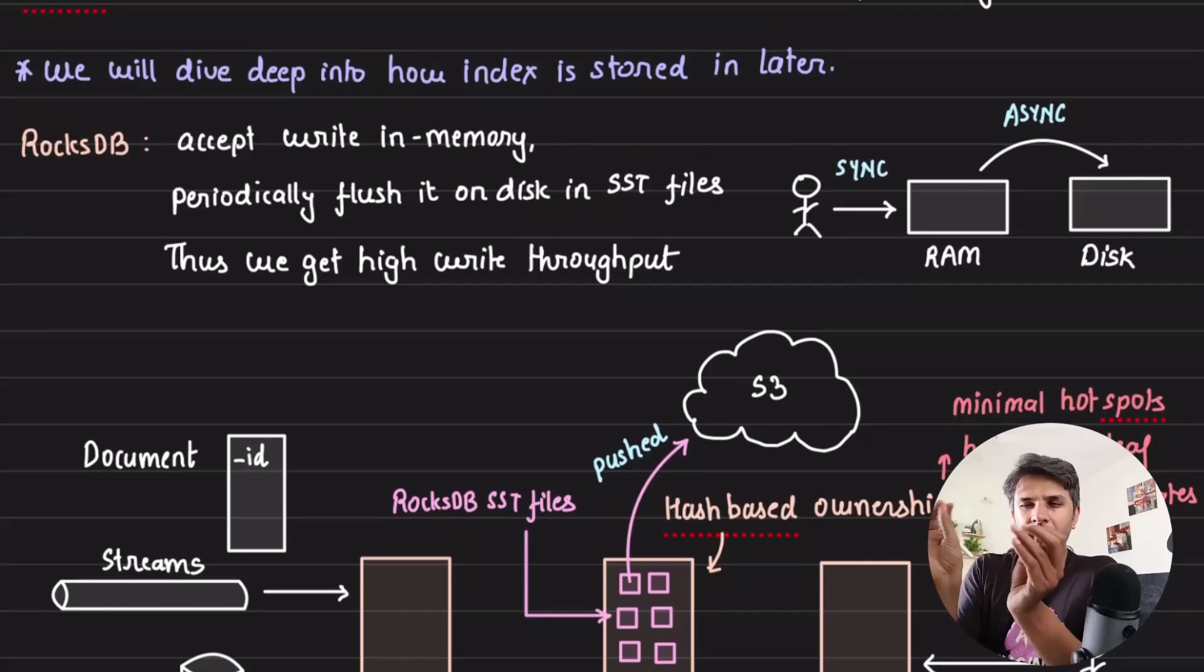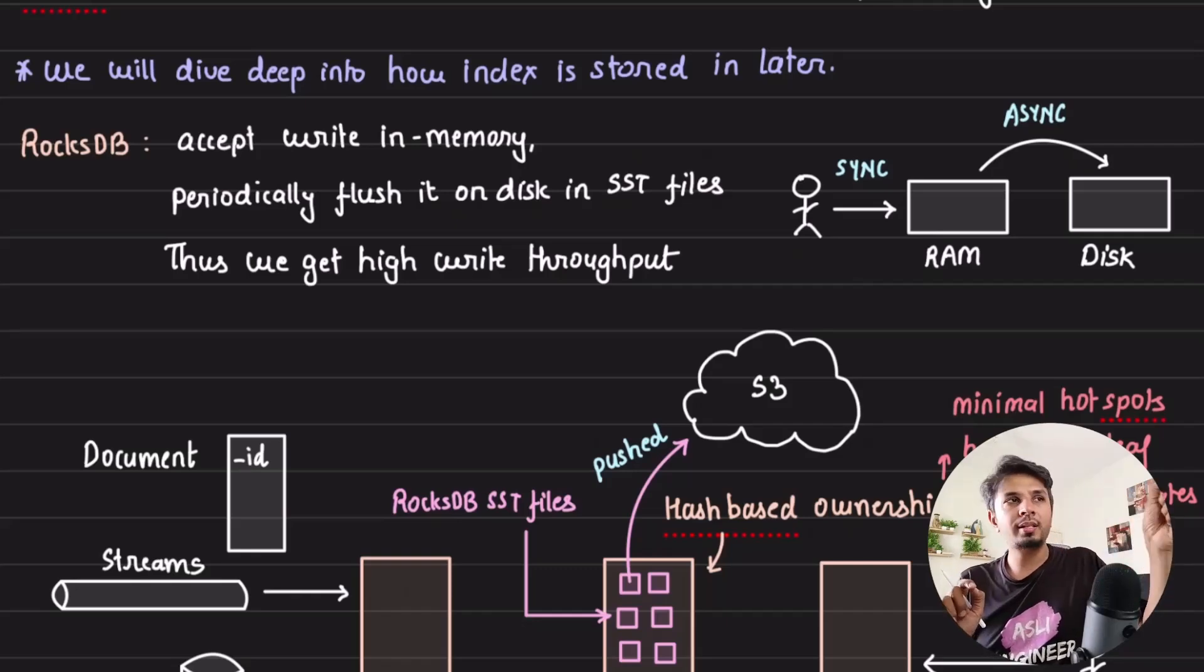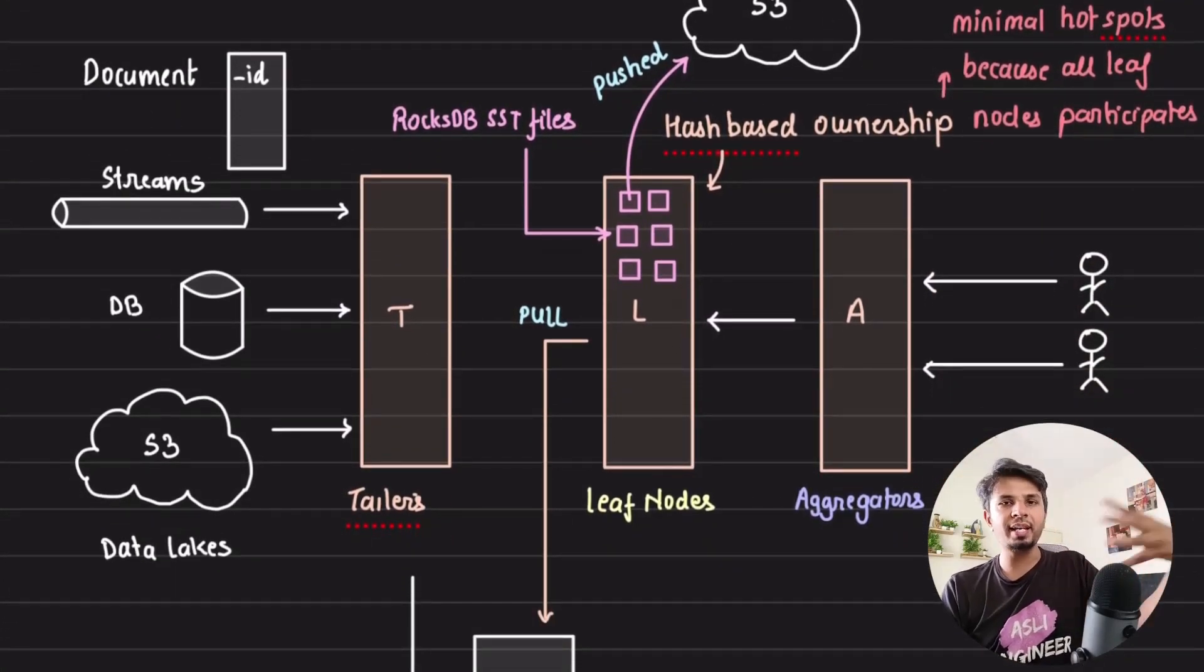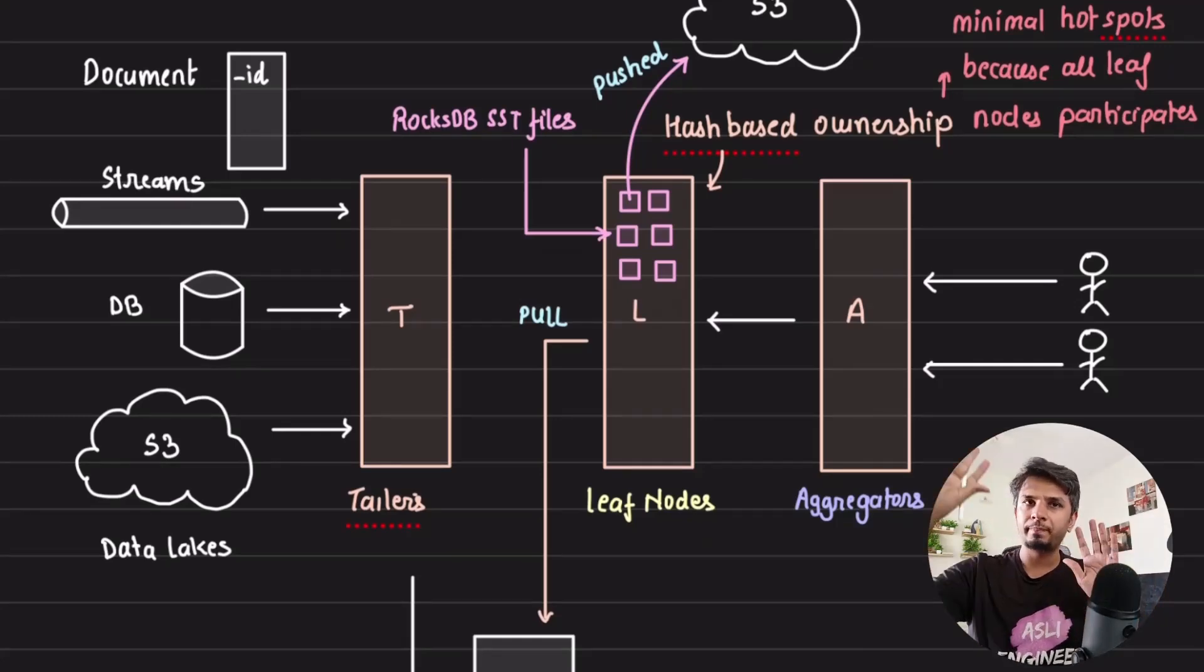Now, RocksDB in general - let me just give you a brief about RocksDB so everybody's on the same page. RocksDB is an LSM tree-based database. Why RocksDB? Given that it's LSM tree-based, the writes that are done to RocksDB are not immediately flushed to disk. The writes are accepted in memory by RocksDB. They're buffered and then periodically flushed to disk. This way you get very high write throughput for RocksDB. And the files are periodically pushed in SST files, which is the sorted string table file. And then these are pushed to S3 for durability reasons. That is why Rockset gets very high write throughput and durability.